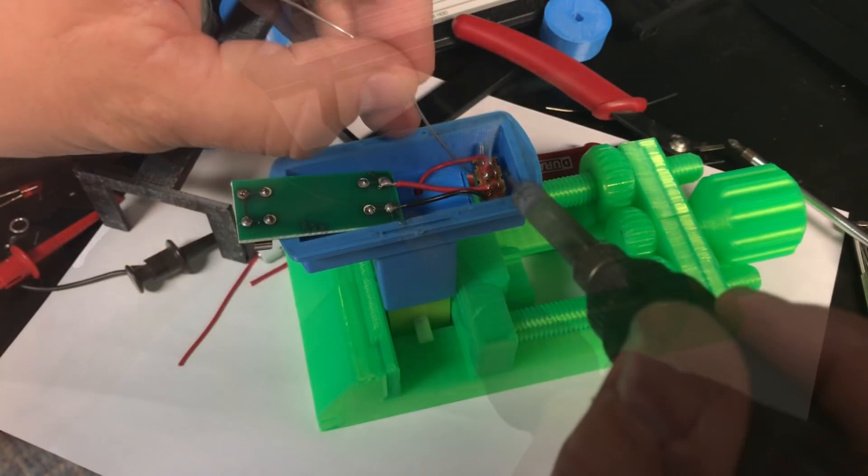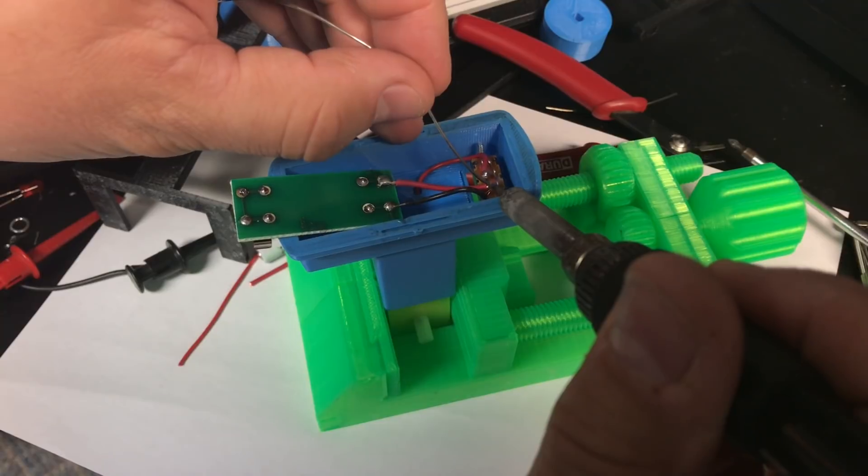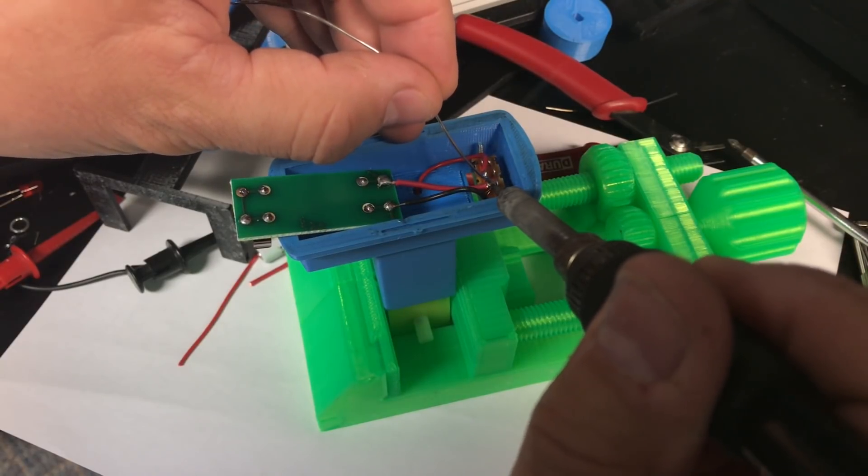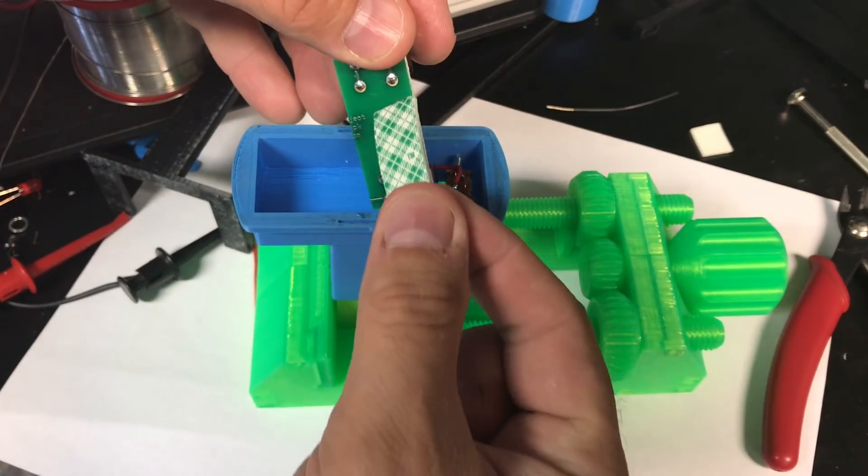Then that little short wire I put on the battery holder I soldered to the switch and then the red wire from the motor I soldered to the other side of the switch.